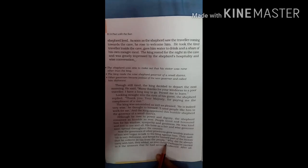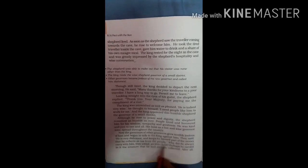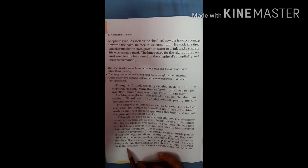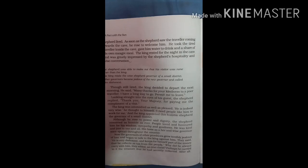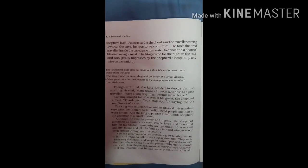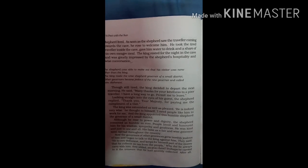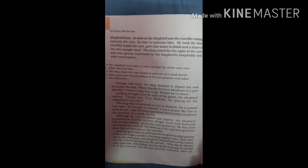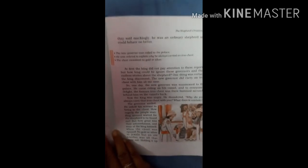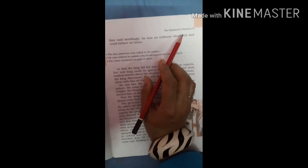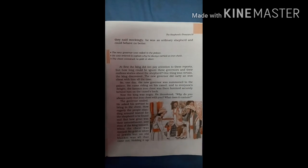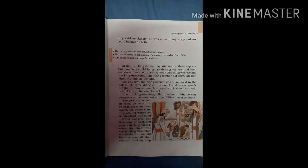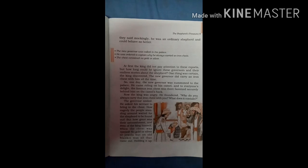Why did he always carry with him, they added, an iron chest? Perhaps he carries in it the treasure that he has secretly collected. They said he always carries an iron chest because he keeps the secretly collected money as treasure in it. That's why he always carries an iron chest with him. After all, they said mockingly, he was an ordinary shepherd and could behave no better. They also told the king that he will do this because he is just an ordinary shepherd, so his behavior cannot be good.